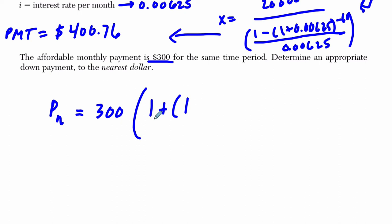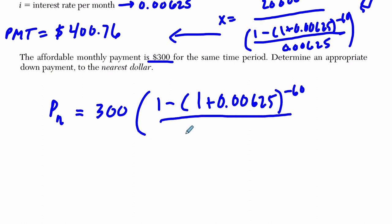$300 times 1 minus 1 plus 0.00625 to the negative 60 over 0.00625.